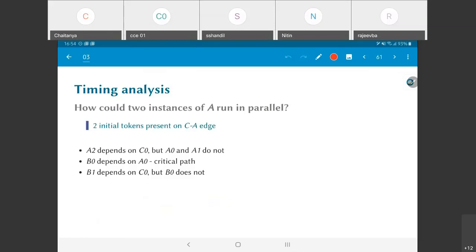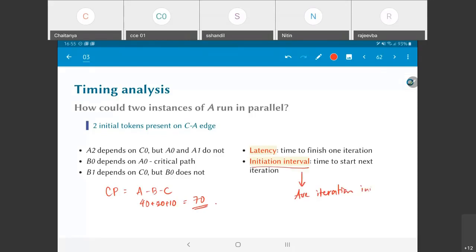B0 depends on A0. That is part of the critical path that you have shown. B1 depends on C0, but B0 does not. So in other words, I have just put down a list of some of the dependencies that do exist and do not. Effectively, what we can see is I have drawn a situation where if I look at the critical path of the graph, that still goes through A to B to C, which is 40 plus 20 plus 10 is equal to 70 time units. But the average initiation interval is equal to 70 by 2, it is equal to 35.